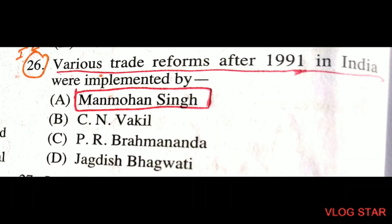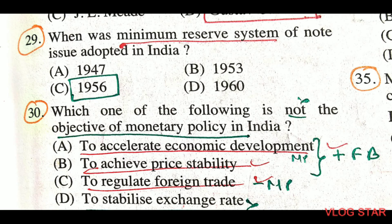Question number 26: various trade reforms after 1991 in India were implemented by Manmohan Singh. Question number 29: when was the minimum reserve system of note issue adopted in India? In 1956, the minimum reserve system of note issue was adopted in India.